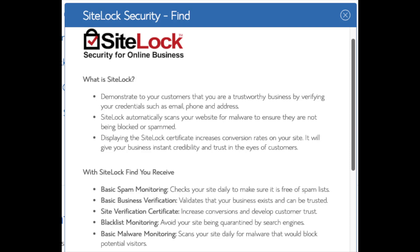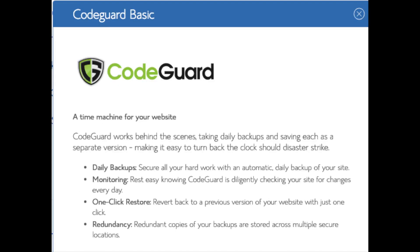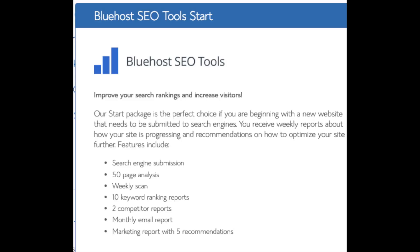SiteLock Security is security for your WordPress website that protects it from hackers — I'd unselect this as there are really good free alternatives. CodeGuard creates daily backups and allows you to restore your site with a click of a button in case something happens, but again there are free alternatives that work just the same. SEO Tools Start you can keep unselected — this add-on submits your site to search engines and provides ranking reports, but you can submit to search engines for free and this isn't necessary.